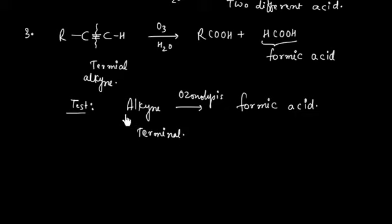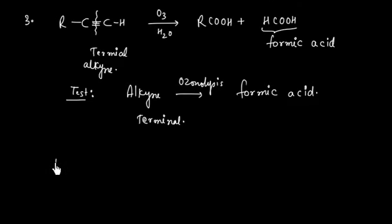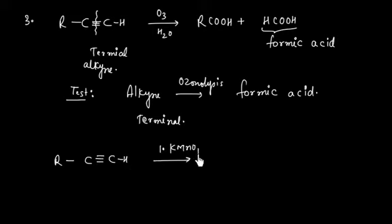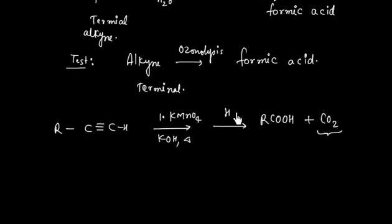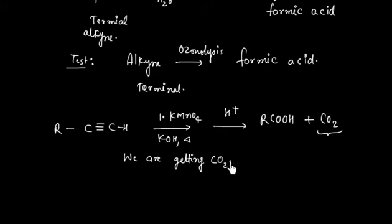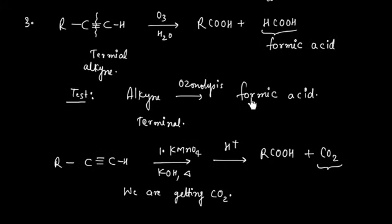Now, this reaction differs from KMnO4. If you have a terminal alkyne and you use KMnO4 in basic medium with heating and acidification, it will give RCOOH plus one molecule of CO2. So in case of KMnO4 we are getting CO2, but in case of ozonolysis we are getting formic acid. So there is a difference.